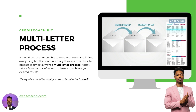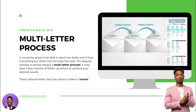This is why the dispute process is a multi-letter process. It'd be great to send one letter and fix everything, but that's not normally the case. The dispute process is almost always a multi-letter process and it can take a few months and a few follow-up letters to achieve your desired goals. Credit Coach DIY will import your credit report and put the letters together for you for the first round. If you need to dispute again, it will change the strategy, create a second round of disputes, analyze the credit report again, compare it to the last one, and create another round of dispute letters every 30 days.